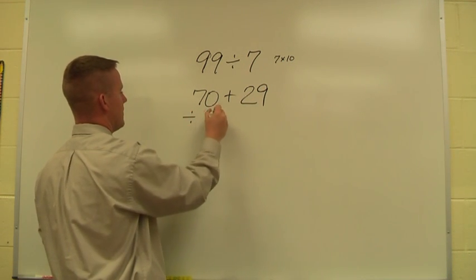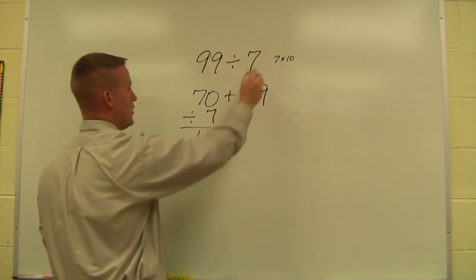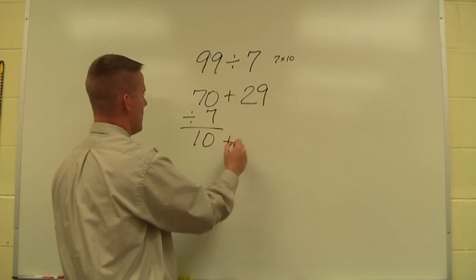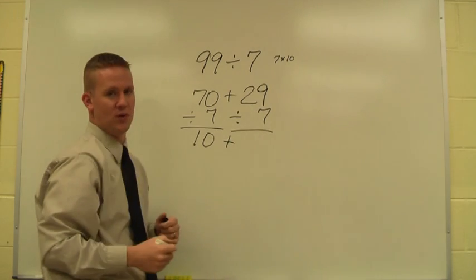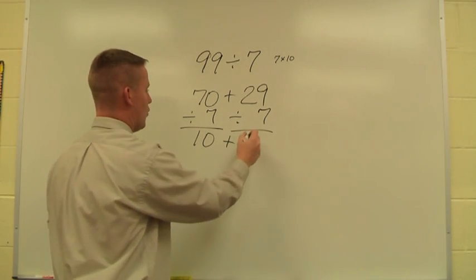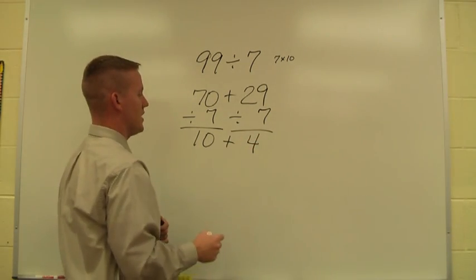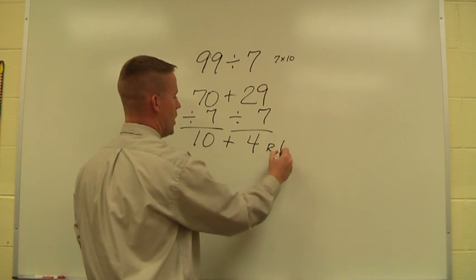Over here, 70 divided by 7 gives us the 10. We already knew that because we started with that. And then the 29 divided by 7. I think how many 7s will go into 29 without going over? 4. That gives me 28, so that would be a remainder of 1.